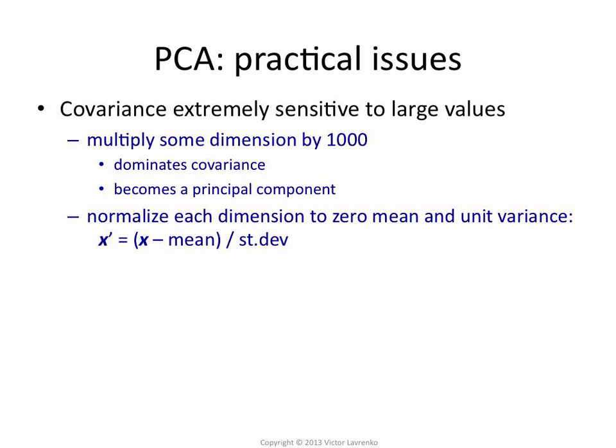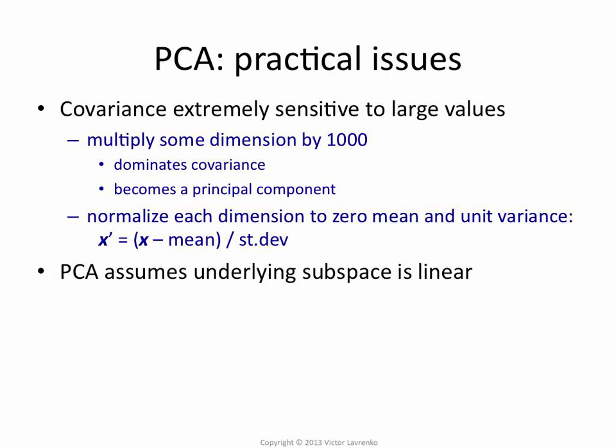So that's not desirable. How do you get around it? Typically, in addition to centering the data, you normalize it to unit variance. For each attribute, you subtract the mean and divide by the standard deviation. So now you have zero mean, unit variance data.